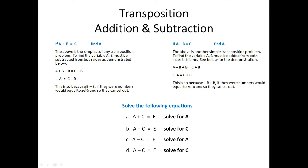This is so because b minus b, if there were numbers, would equal to zero and so they would cancel out.